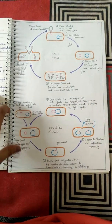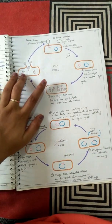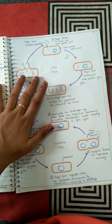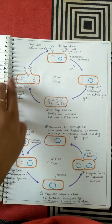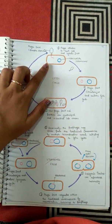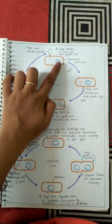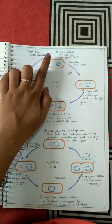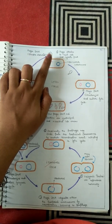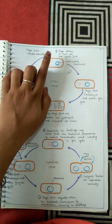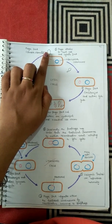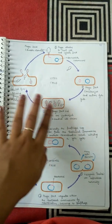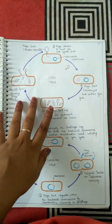In this diagram you can see the lytic cycle and lysogenic life cycle of bacteriophage. In the lytic cycle, this is a bacterial cell with a bacterial chromosome, and here is a bacteriophage which feeds upon the bacteria. The bacteriophage has double-stranded DNA inside it. This is a T2 bacteriophage lytic cycle.